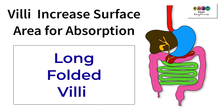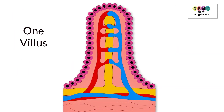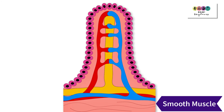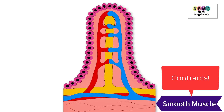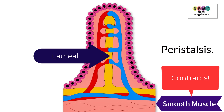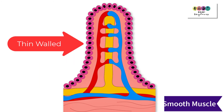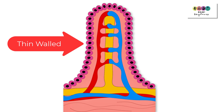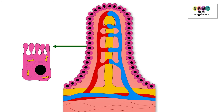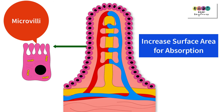Looking at the structure of one individual villus helps explain absorption. Each villus sits on the intestinal wall and is made of smooth muscle, which can contract. When it does so rhythmically — as in the case of the alimentary canal — it's called peristalsis, which moves food onwards through the digestive system. At the centre of each individual villus is a lacteal, which is a lymphatic vessel. The villi are very thin-walled, and the individual cells lining each villus themselves have infoldings called microvilli, which further increase the surface area for absorption.